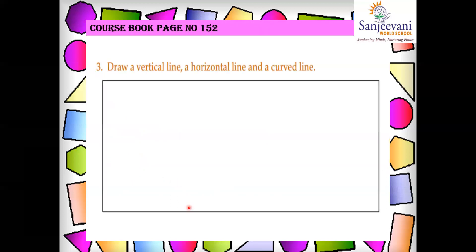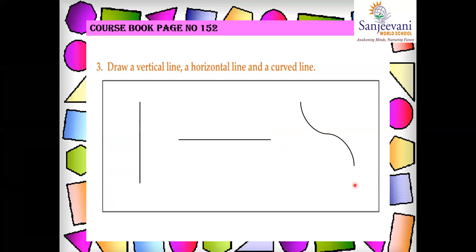Now, page number 152: draw a vertical line, a horizontal line, and a curved line. This is my vertical line, horizontal line, and curved line. In this box, please draw the lines the way I have done. To draw the vertical and horizontal line, use a ruler. Don't do freehand drawing. The curved line you can draw freehand.